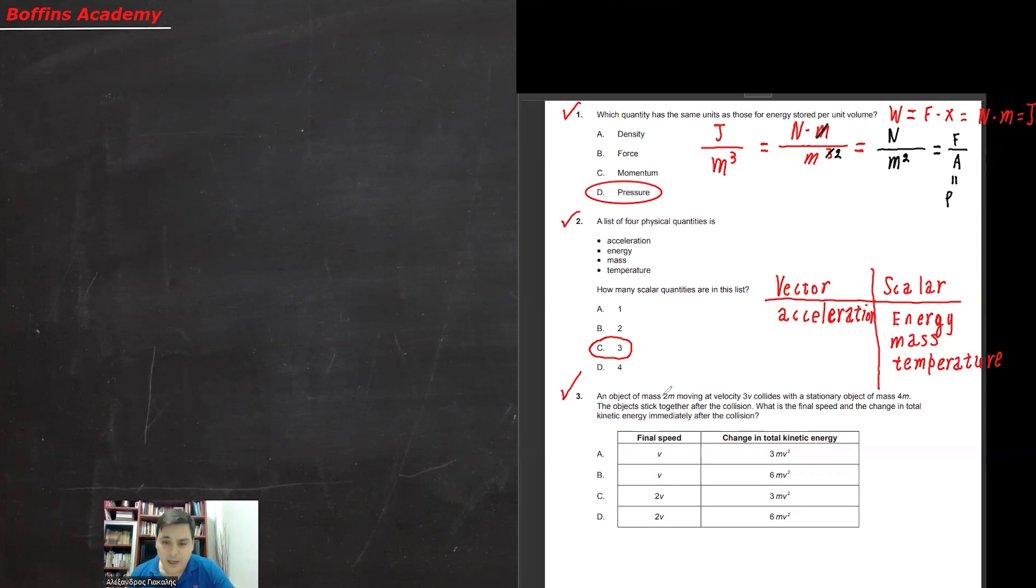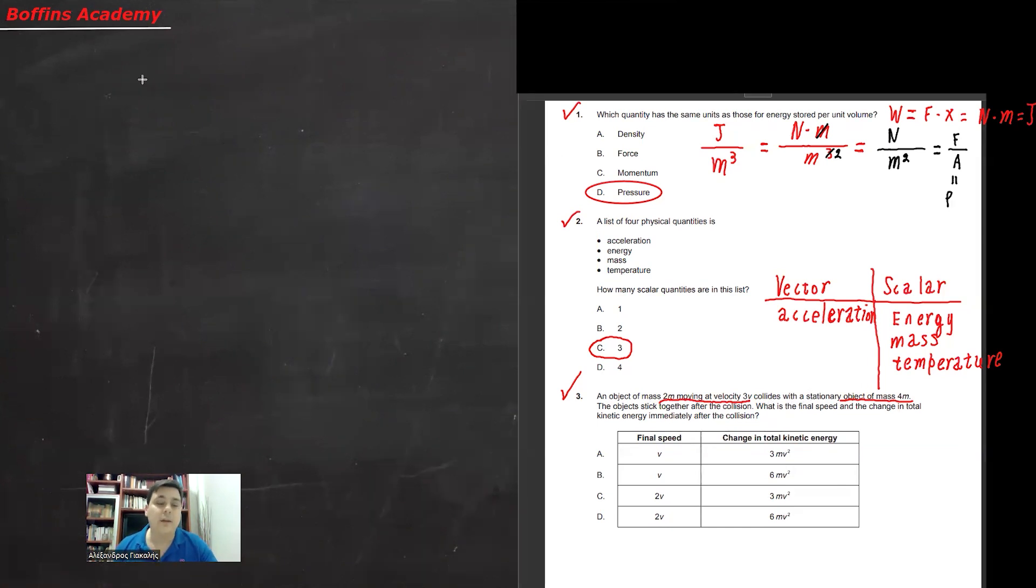An object of mass 2m moving at velocity 3v collides with a stationary object of mass 4m. The objects stick together after the collision. What is the final speed and the change in total kinetic energy immediately after the collision. So we have to remember that in 99.9% of occasions and situations, you can apply the conservation of momentum theorem.